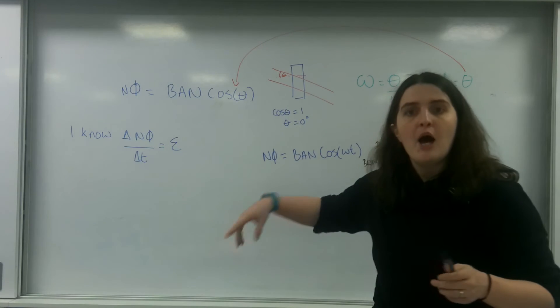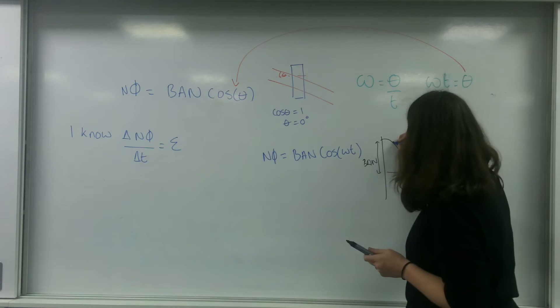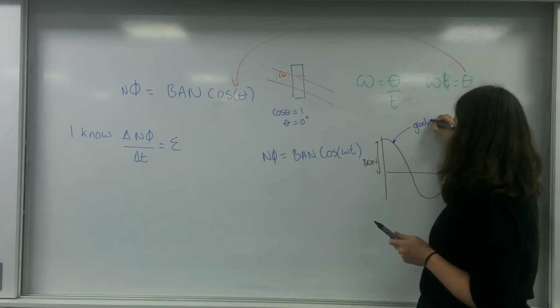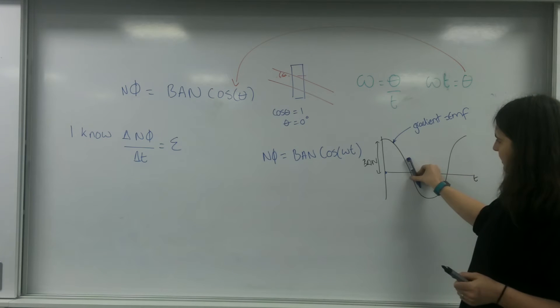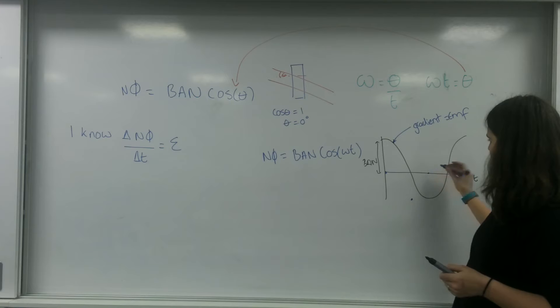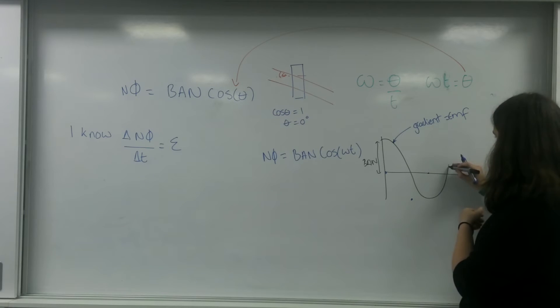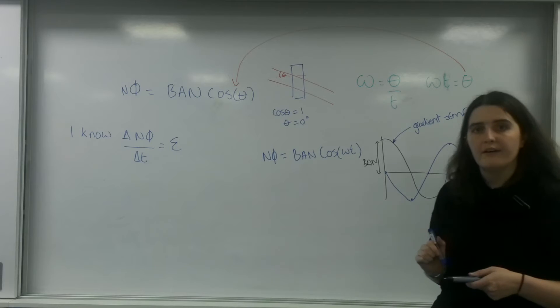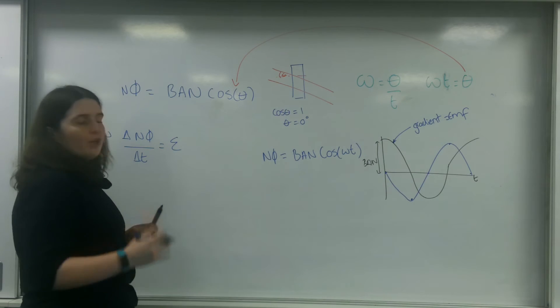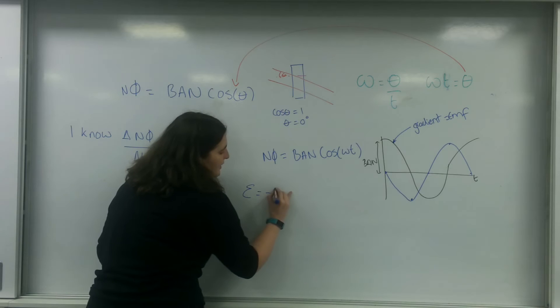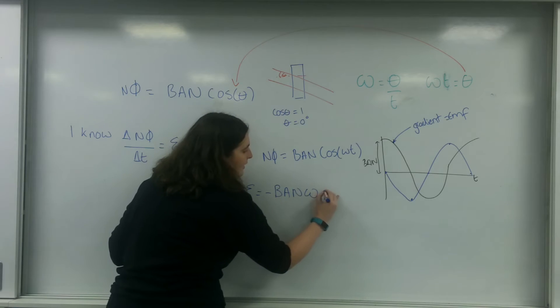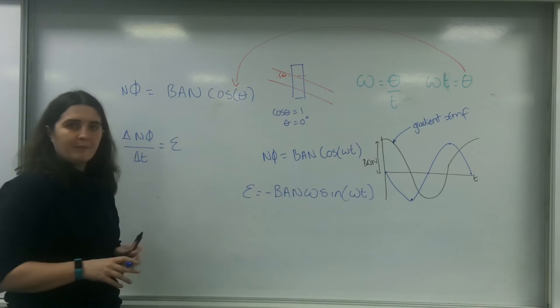Now, as I said before, my gradient of that graph is my EMF. So I'm going to do that. At this point here, I've got zero. At this point, I've got maximum negative, zero, maximum positive. I'm just going to make this graph a little bit more than that. And zero again. So I've got a minus sine graph here. Those who know how to differentiate, you'll be able to do this. But you don't need to know. What the equation in the data sheet is, is that EMF is minus BAN omega sine omega T.